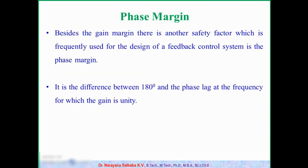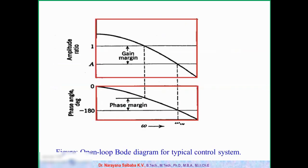Now we come to phase margin. Just like gain margin gives information about how much additional gain is required to destabilize the system, phase margin is another safety factor frequently used for the design of feedback control systems. It is the difference between 180 degrees and the phase lag at the frequency for which the gain is unity — it is completely opposite to the gain margin concept.